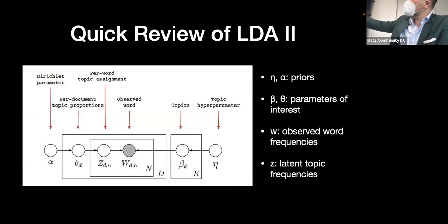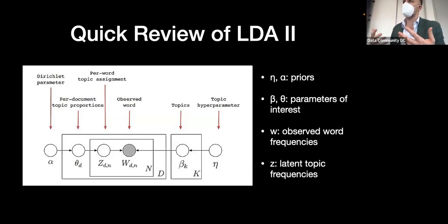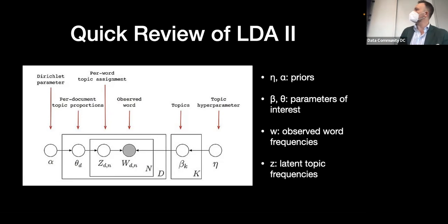Here's an intuitive take on LDA: it takes a collection of documents full of words and splits them into two groups — topics, which are collections of related words, and simplified documents, which are now collections of topics instead of collections of words. These are represented by variables beta and theta respectively. There's a more technical Bayesian representation: priors alpha and eta inform the posterior fit for beta and theta, with observed words in the middle helping fit the model. Now I'll do a live coding demo.